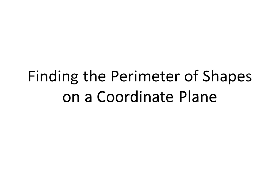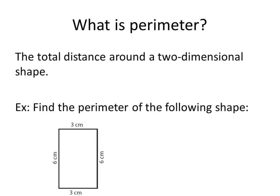We're starting a new standard on coordinate geometry, and in this video we're going to be finding the perimeter of shapes on a coordinate plane. Perimeter is the total distance around a two-dimensional shape. In this example, we're going to find the perimeter of the following shape.